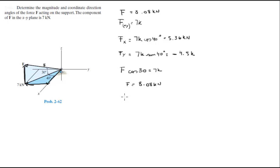which is equal to F sine 30, which is this vector right here, which equals 4.04 kN. This is Fz.